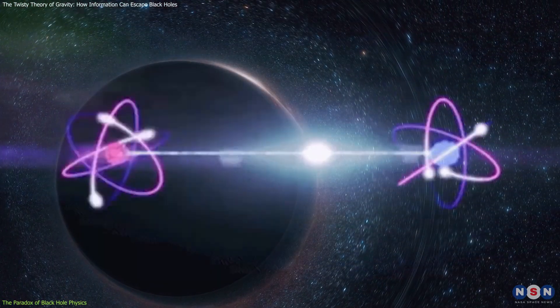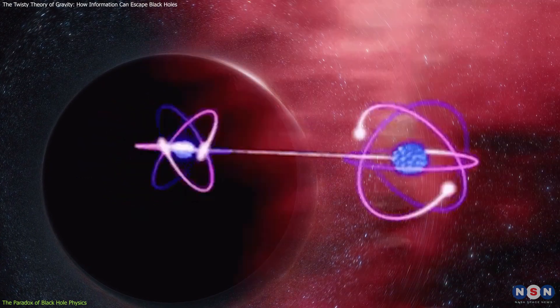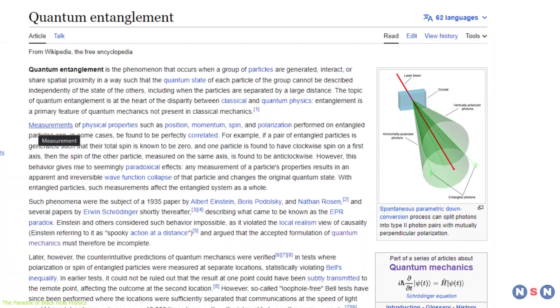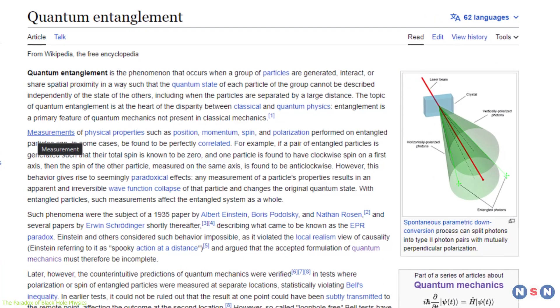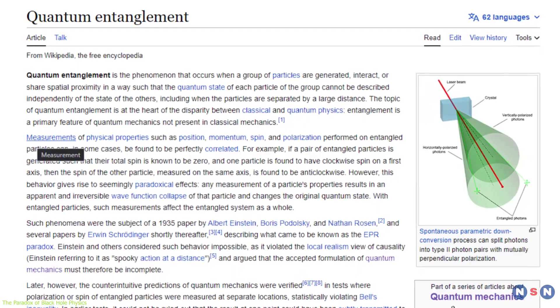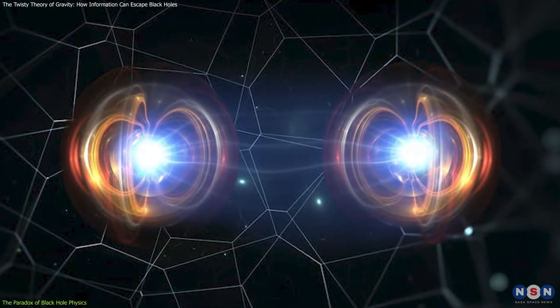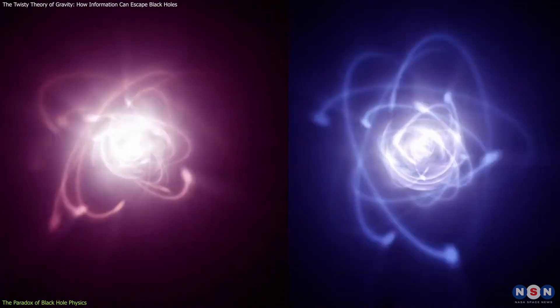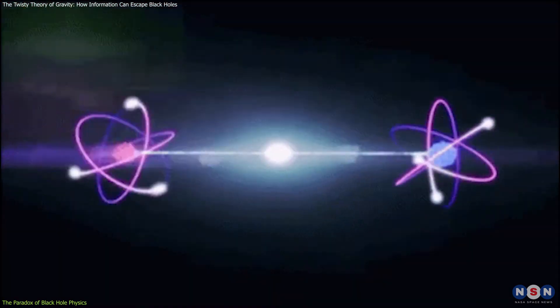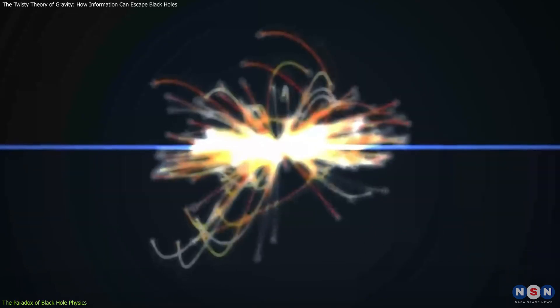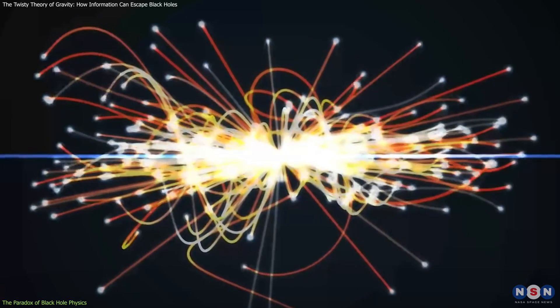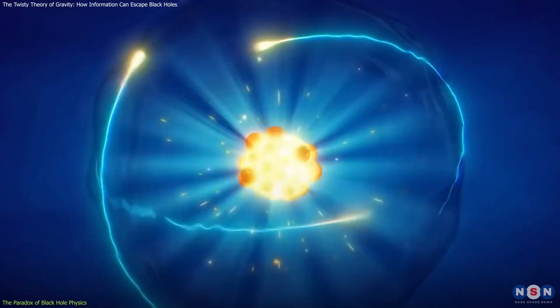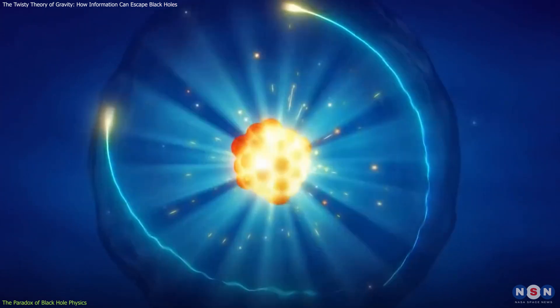One way to illustrate the paradox is to consider what happens when two entangled particles fall into a black hole. Entanglement is a quantum phenomenon that enables two or more particles to share a quantum state, even when they are far apart. For example, if two entangled particles have opposite spins, then measuring the spin of one particle will instantly reveal the spin of the other particle, no matter how far apart they are. This spooky correlation does not violate causality or the speed of light because it does not involve any communication or information transfer between the particles. It is just a consequence of their quantum state.